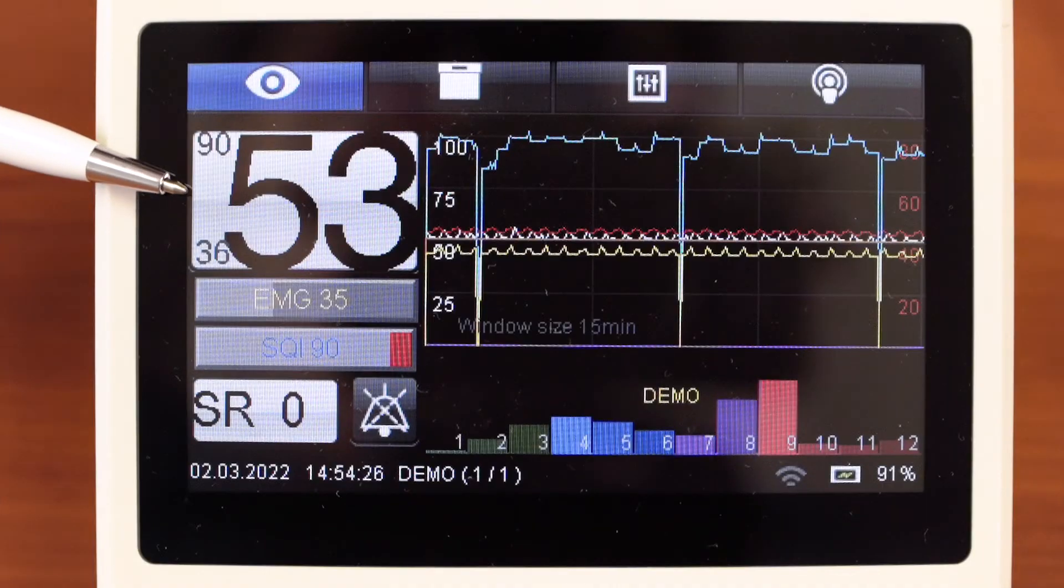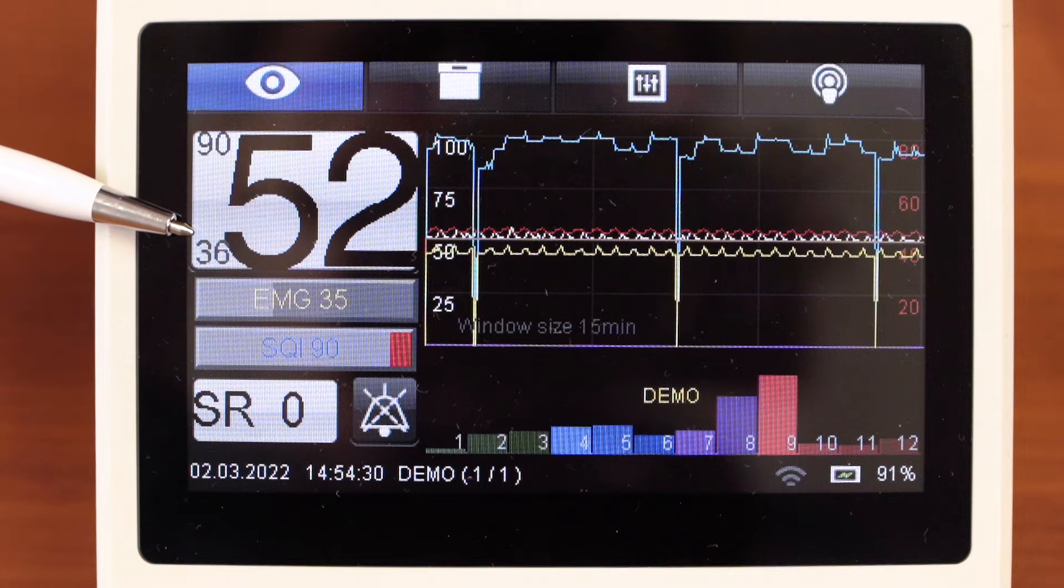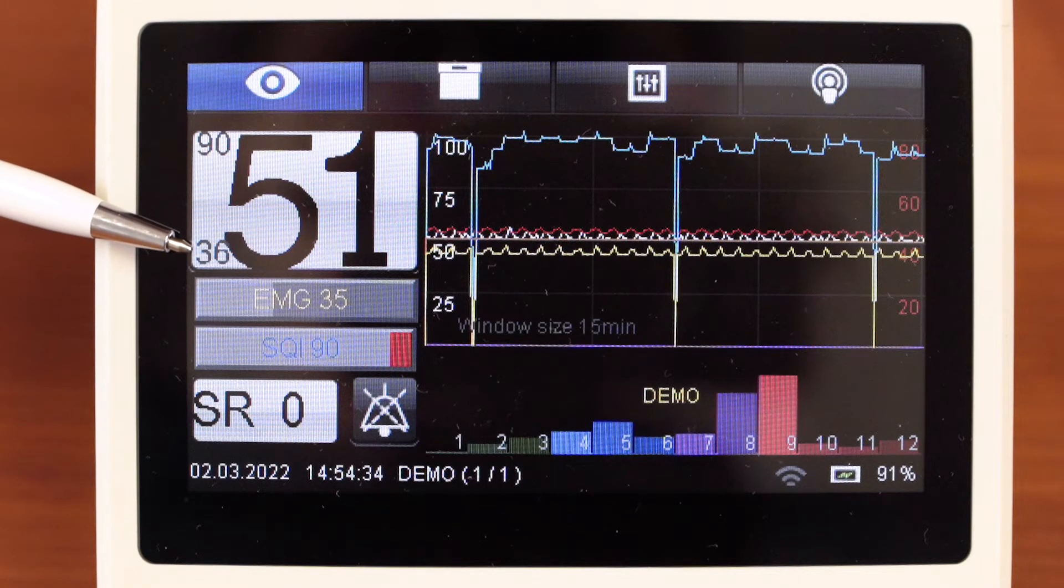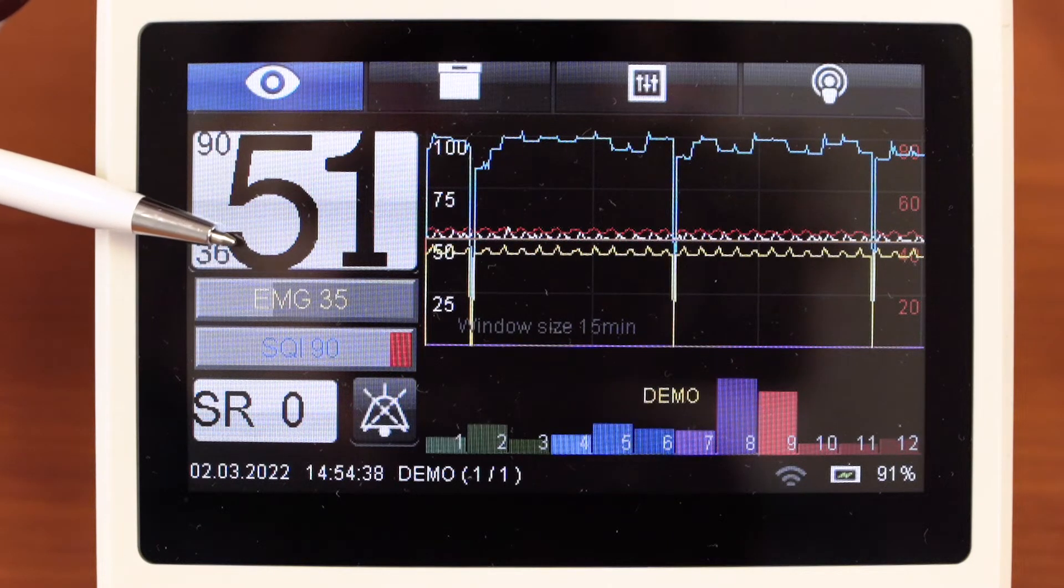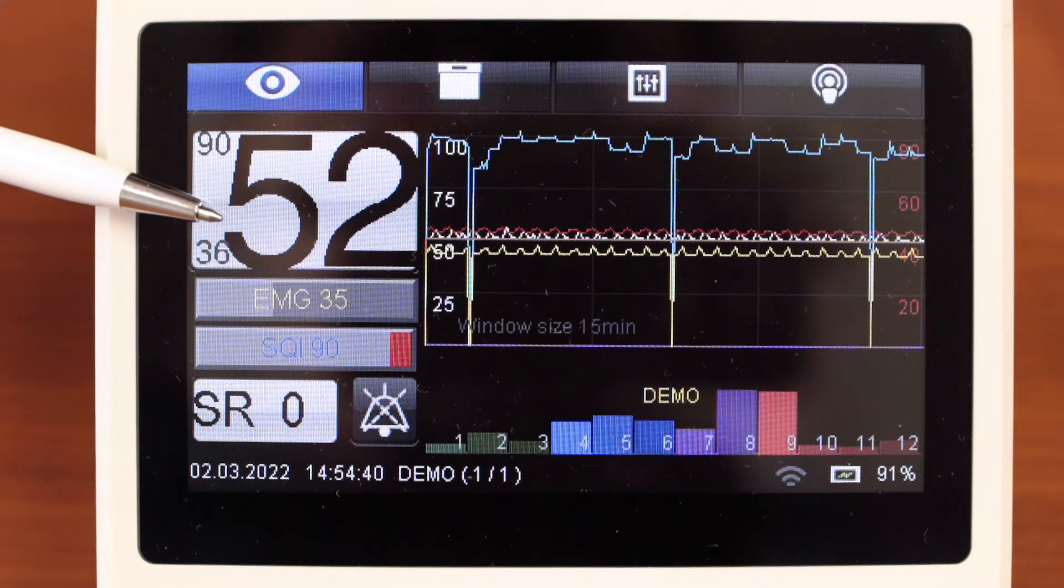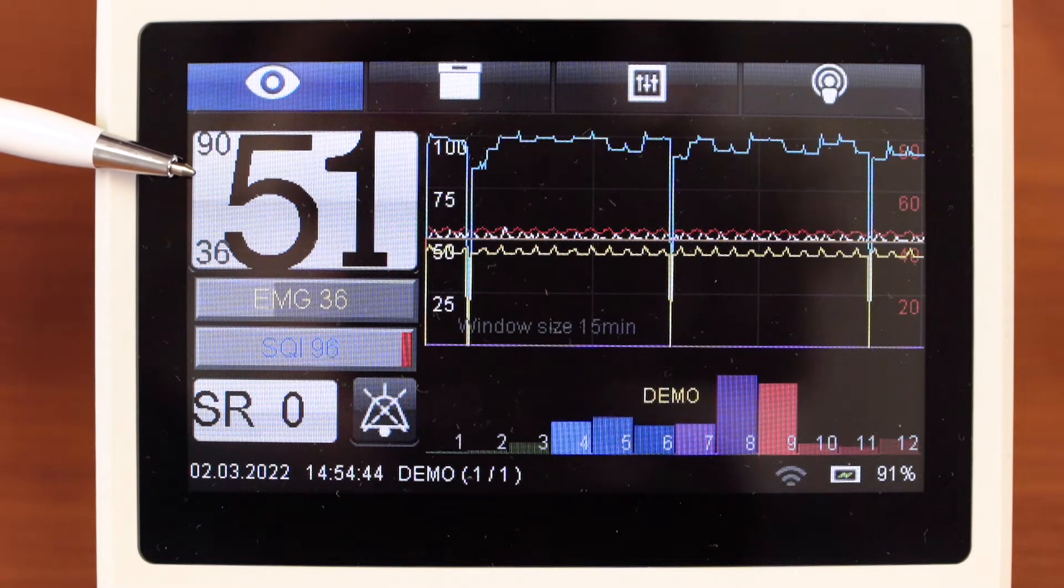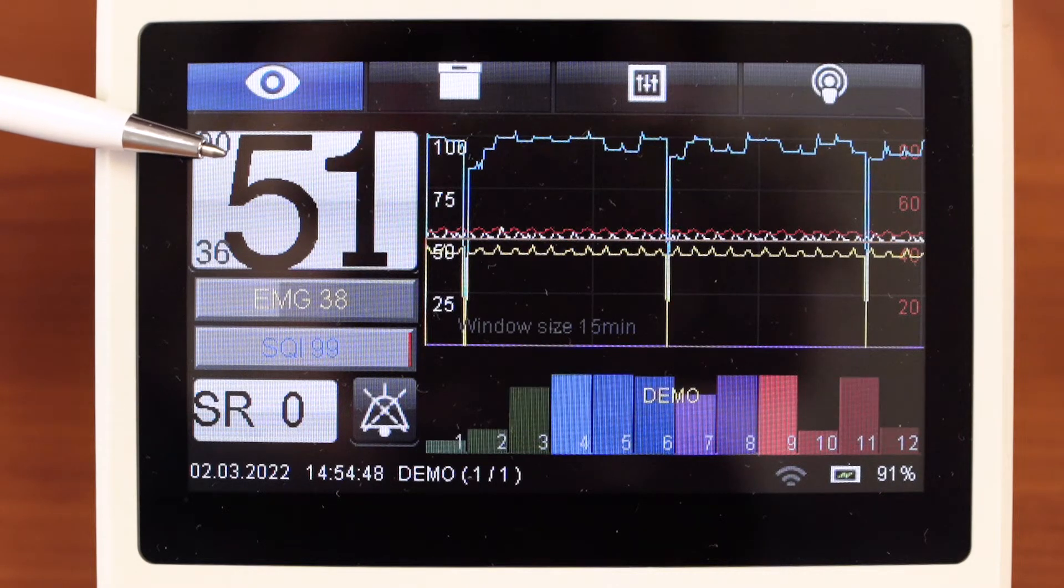Brain activity index is the main parameter. It indicates the level of consciousness depression by analyzing EEG, taking into account the information about typical signs of anesthetic impact on patients. Now activity index is 52. A value from 40 to 60 is a surgical stage of anesthesia.